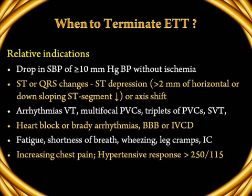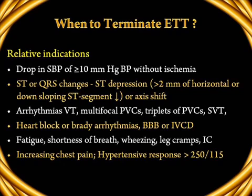The relative indications for terminating the exercise test include: a drop in systolic blood pressure of more than 10 mm without evidence of ischemia on the ECG monitor; ST depression of more than 2 mm of horizontal or downsloping nature with or without axis shift; arrhythmias — ventricular tachycardias, multifocal premature ventricular complexes, triplets of PVCs, supraventricular tachycardia, heart block or bradyarrhythmias, bundle branch blocks, and intraventricular conduction defects; fatigue, shortness of breath, wheezing, leg cramps, intermittent claudication, increasing chest pain; and hypertensive BP response of systolic more than 250 or diastolic more than 115.